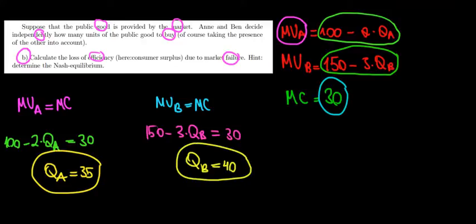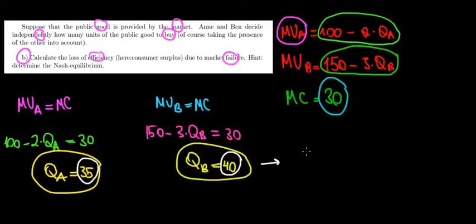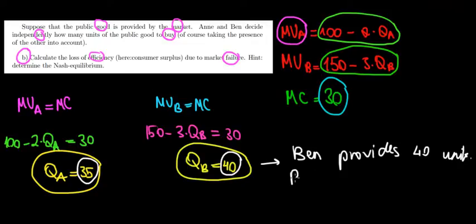Ben maximizes his utility at 40 units and N maximizes hers at 35. If Ben provides 40 units, N has no reason to provide extra units because she gets no additional utility from them, and neither does Ben. So Ben provides 40 units, N free-rides, and both consume it.